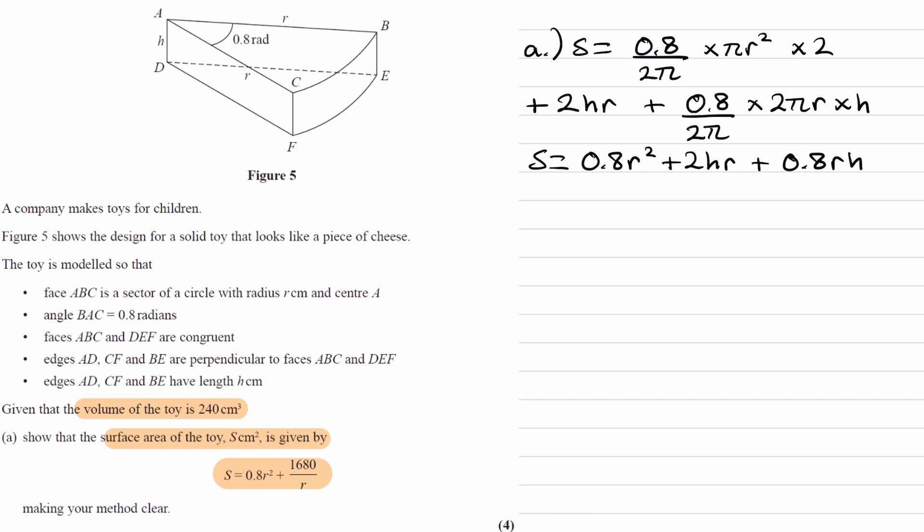So what we have here is not quite the same as what we have down here. The difference is that, the key difference, is that in our expression we have h, and in the expression that we want to get, there is no h. So we have to come up with some equation to get rid of that h, and we can do so by considering the volume of the toy.